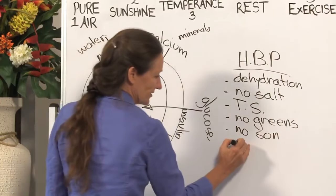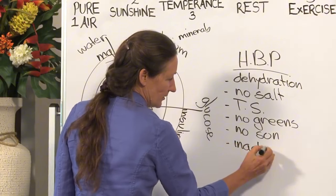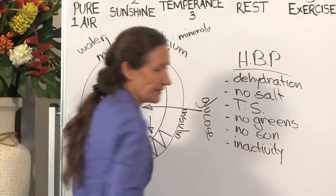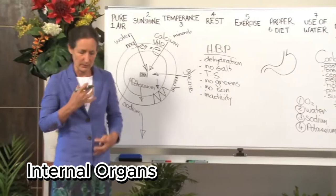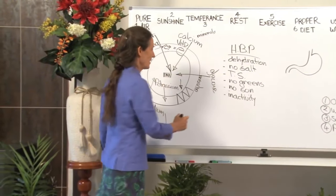High blood pressure can be caused because of inactivity. When you exercise you get the circulation of the blood out of the internal organs or areas of the body and out to the extremity which takes pressure off the heart.